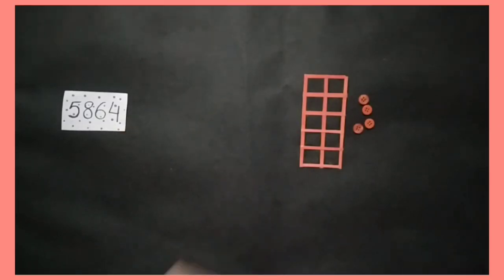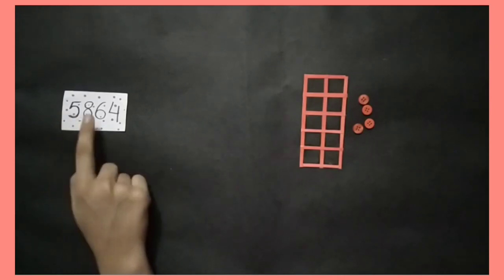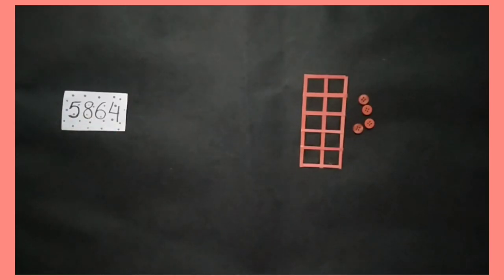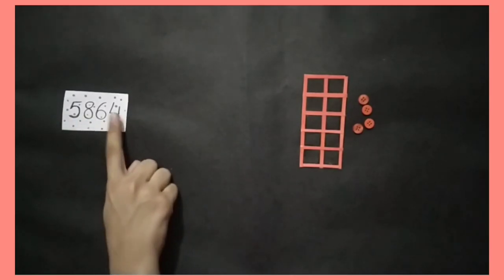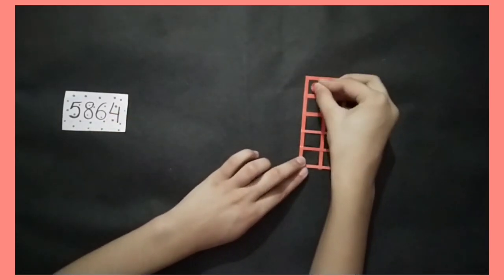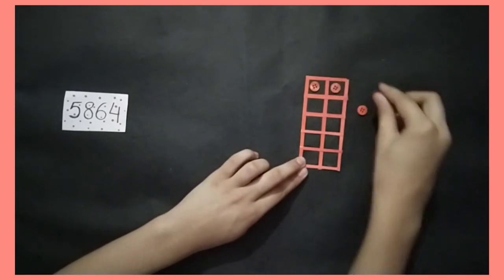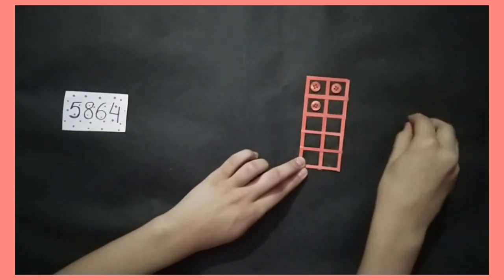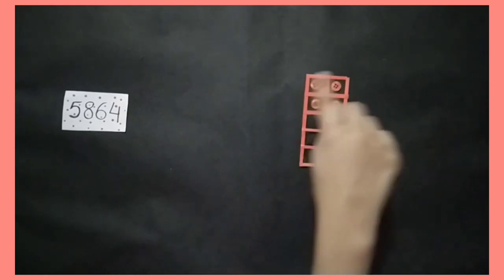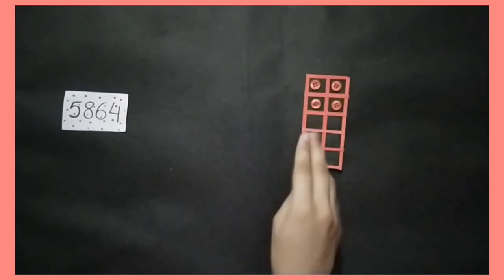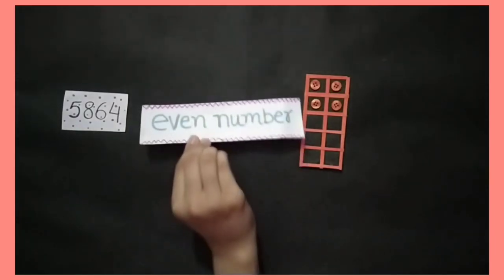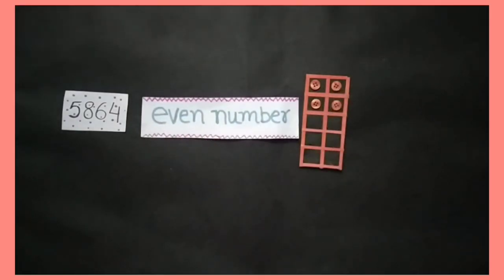Now we will take a 4-digit number, 5864. We will only take the digit at the ones place, that is 4. Count with me and place 4 buttons in the button box: 1, 2, 3, 4. You can see that digit 4 forms complete pairs of buttons. So 5864 is an even number.